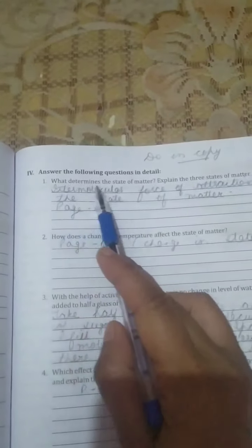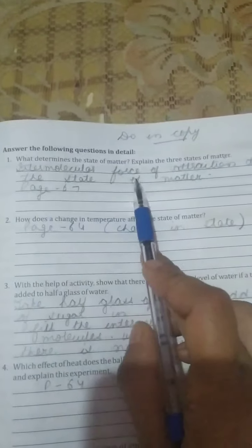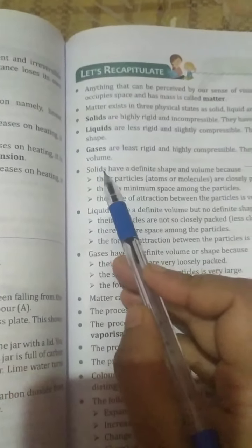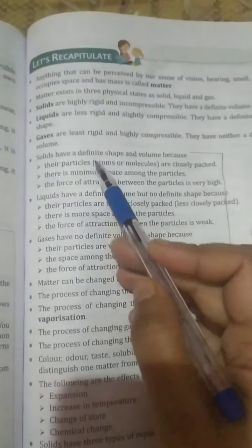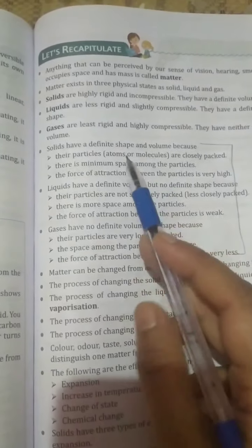First, what determines the state of matter? Explain the three states of matter. So, intermolecular force of attraction determines the state of matter. To explain three states of matter, you have to open page number 67. Here it is written solid, liquid, and gas. Among them, you can write two points for each, means three names and two points for each matter.